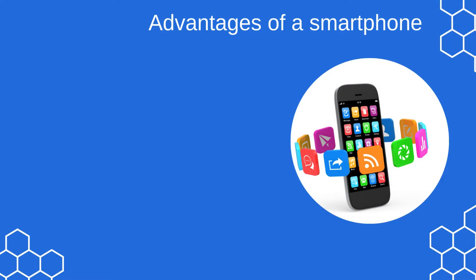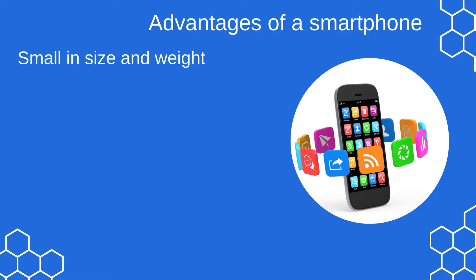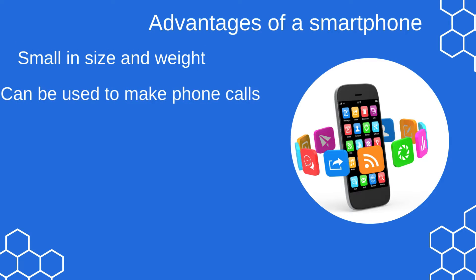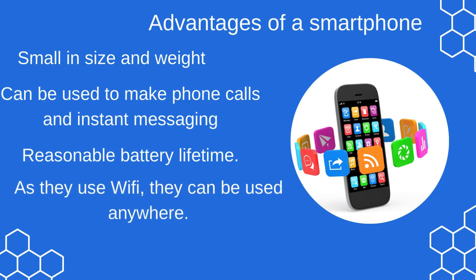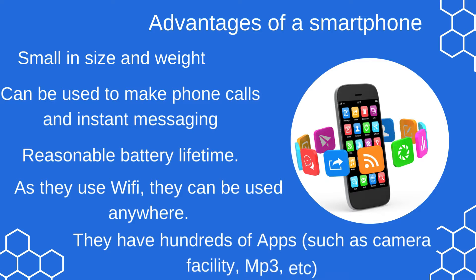Advantages of a smartphone include: A: Small in size and weight. B: Can be used to make phone calls and instant messaging. C: Reasonable battery lifetime. D: As they use Wi-Fi, they can be used anywhere. E: They have hundreds of apps, such as camera facility, MP3, etc.